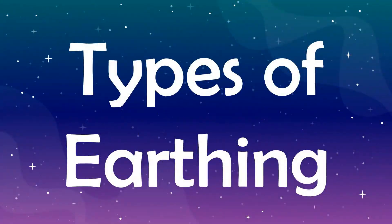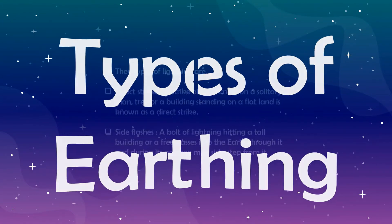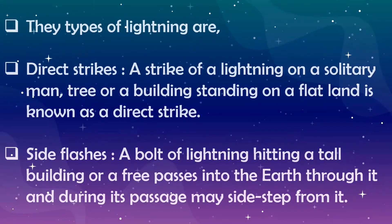Let's see about the types of earthing. There are 4 main ways of earthing of lightning. They are direct strikes, side flashes, contact voltages, and step potentials.